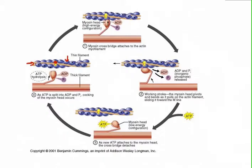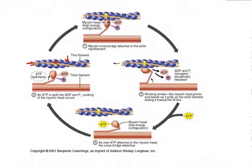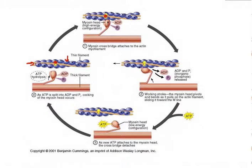Opening up the binding site will allow the myosin to eventually bind to the actin. I'll draw in the calcium up here. We have the myosin cocking up and binding to the myosin binding site on the actin filament.